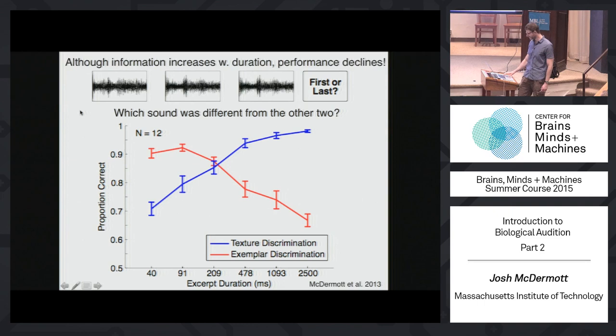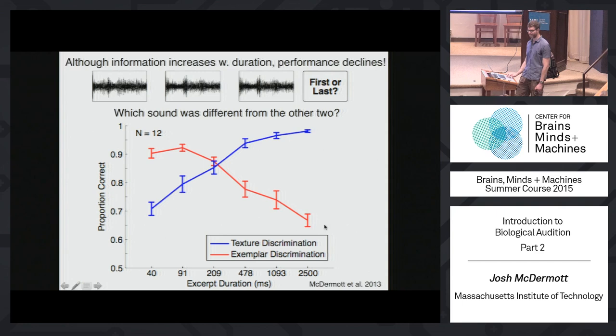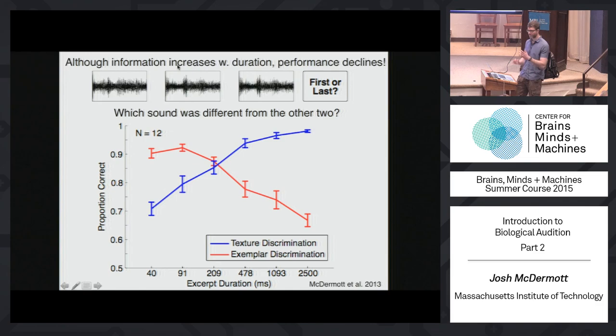People are good at this task when the excerpts are very short — on the order of 100 milliseconds. They can very easily tell which of the two excerpts is different. But as duration gets longer and longer, they get progressively worse and worse. We think this is consistent with the idea that when you are hearing a texture — once it's a couple seconds long — you're predominantly representing the statistical properties, averaging properties over time, and you lose access to the details that differentiate different examples of rain.